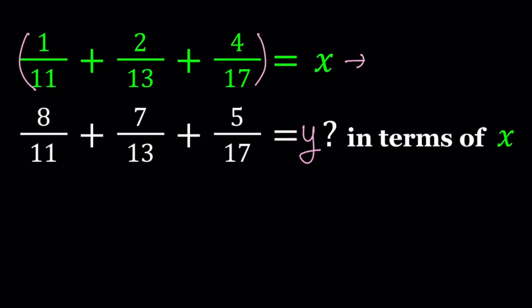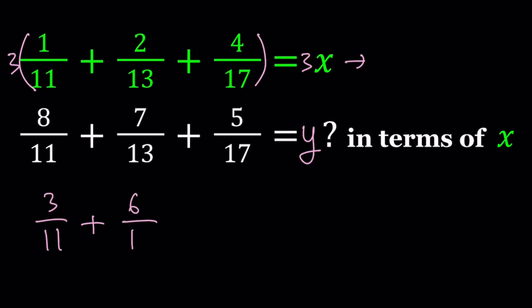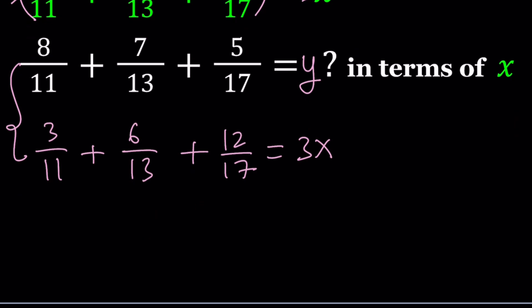Take this expression, multiply by 3 — at the end it's going to be 3x. So 3 × 1/11 = 3/11, 3 × 2/13 = 6/13, and 3 × 4 = 12, giving 12/17. This equals 3x. Now we've got two equations to work with. Notice that 8 + 3 = 11, 7 + 6 = 13, and 5 + 12 = 17. It's not a coincidence — it's been arranged that way.